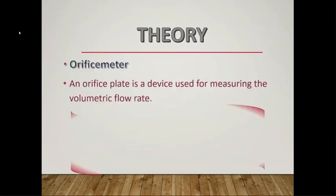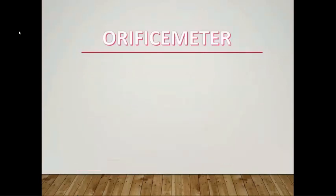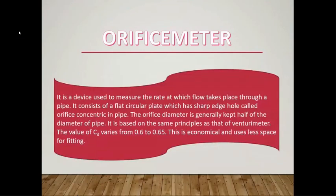The orifice meter uses the same principle as the venturi nozzle, namely Bernoulli's principle, which states that there is a relationship between the pressure of the fluid and the velocity of the fluid — when velocity increases, pressure decreases and vice versa. The orifice meter is a device used to measure the rate at which flow takes place through a pipe. It consists of a flat circular plate with a sharp-edged hole called an orifice, concentric in the pipe. The orifice diameter is generally kept half the diameter of the pipe.